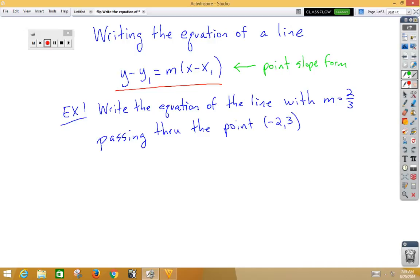We're simply plugging into the formula, so we have y minus 3 is equal to two-thirds x. We have a double negative, which makes a positive 2, and that's your equation of the line.